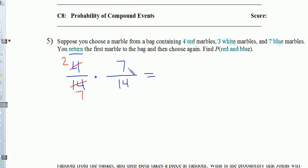Notice here that the 7 and the 7 can actually reduce, so we get a 1 and a 1. And also the 2 and the 14 can reduce. So we're down to 1 times 1 in the numerator over 1 times 7 in the denominator. So we get a probability of 1/7. Let's go ahead and box that up. That's our final answer.